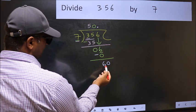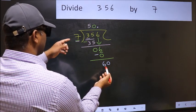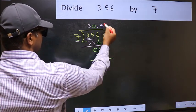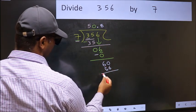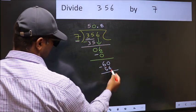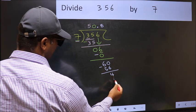So 60. A number close to 60 in 7 table is 7 eights 56. Now you should subtract. You get 4, and continue the division.